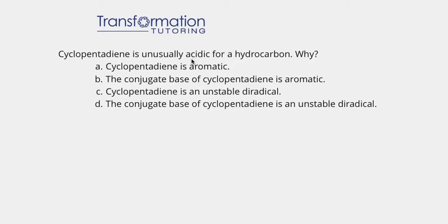Why is cyclopentadiene so acidic? In order for us to do this question, we must first draw out our cyclopentadiene. Cyclo means it's a ring, penta means it has five carbons, and diene means it has two double bonds, like this.